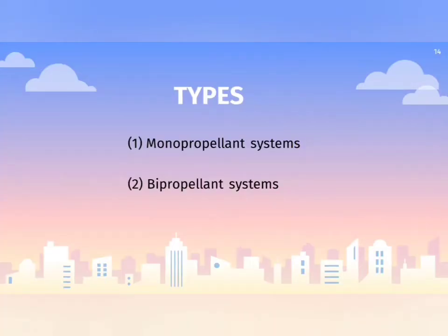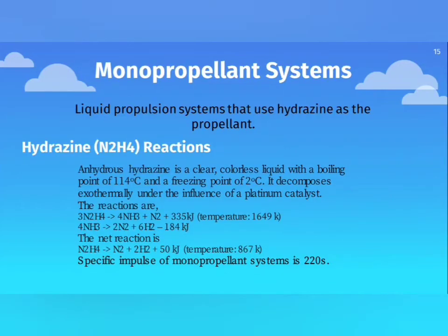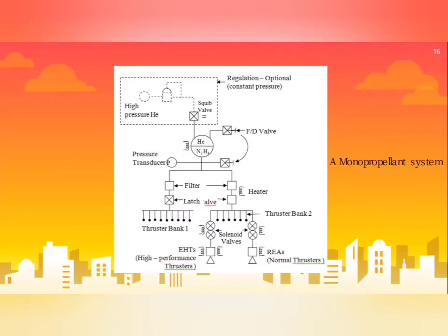There are two types of liquid propulsion systems: mono propellant and bi propellant. Mono propellant systems use hydrazine as the propellant. Hydrazine is a clear colorless liquid with a boiling temperature of 114 degrees Celsius and a freezing temperature of 2 degrees Celsius. It can be decomposed under the influence of a platinum catalyst. The specific impulse of mono propellant systems is 220 seconds.